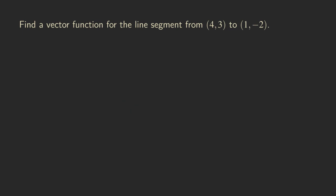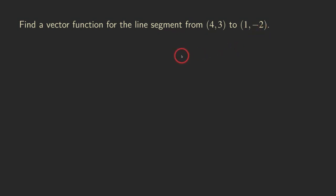Hello everyone, it's Wilson here. Today, let's talk about finding a vector function for the line segment from a point (4, 3) to another point (1, -2). So how do we find this vector function for this line segment?